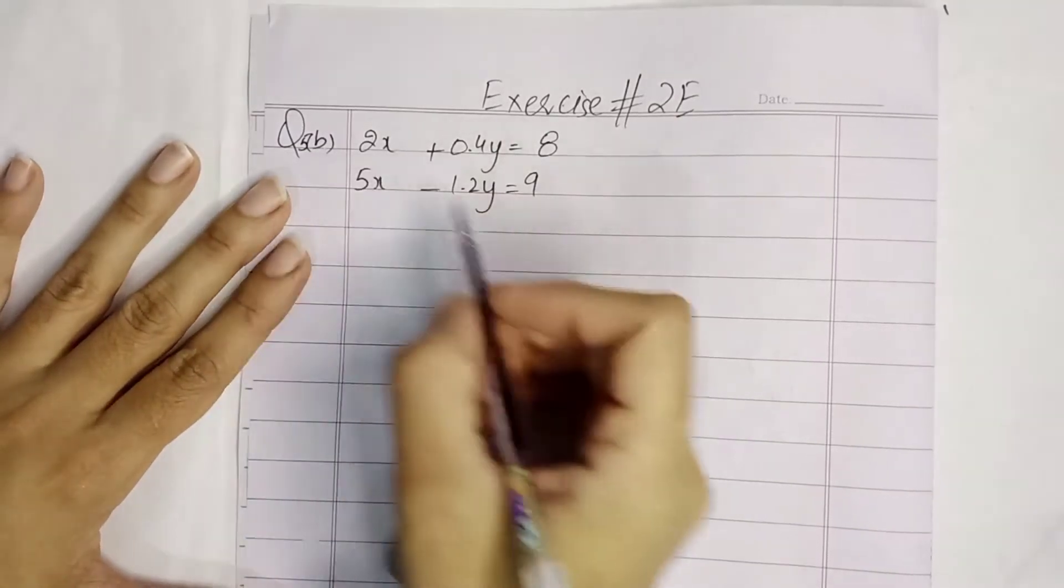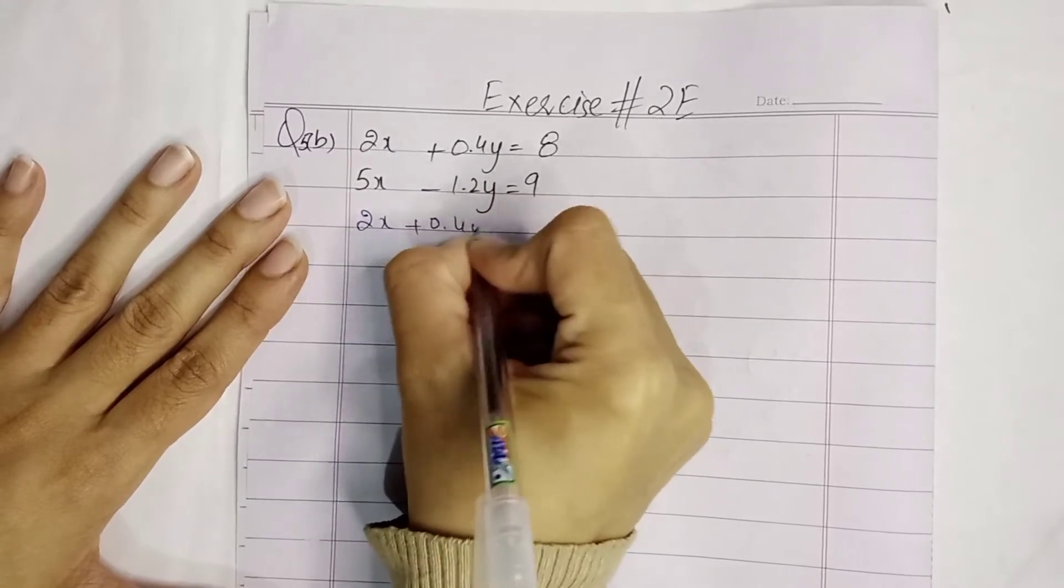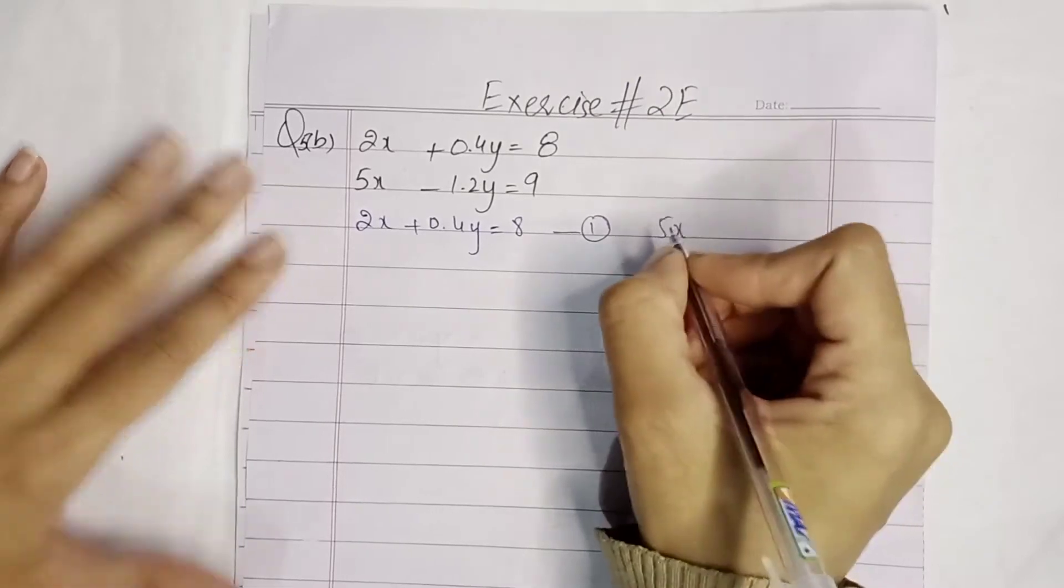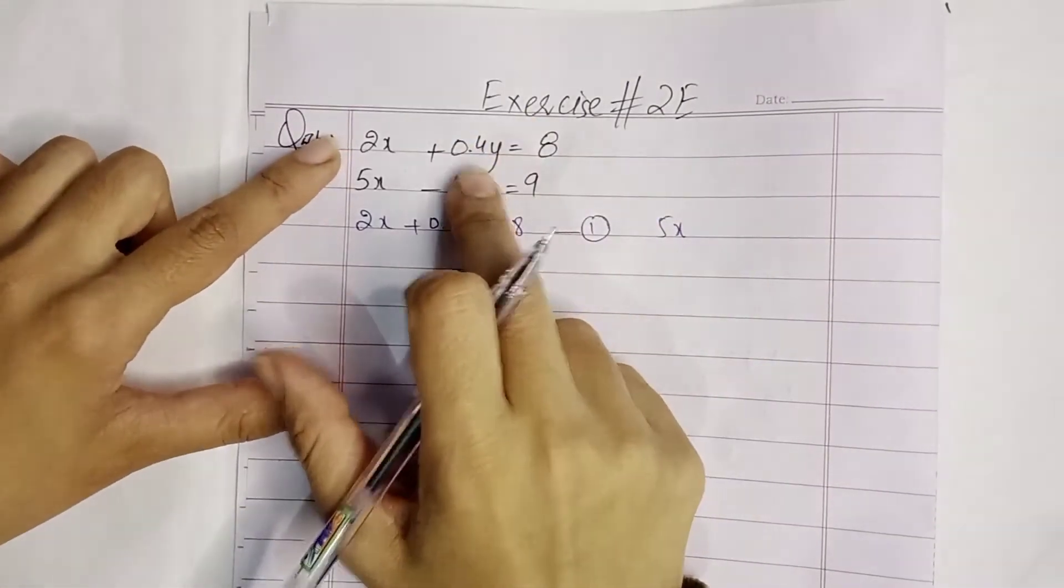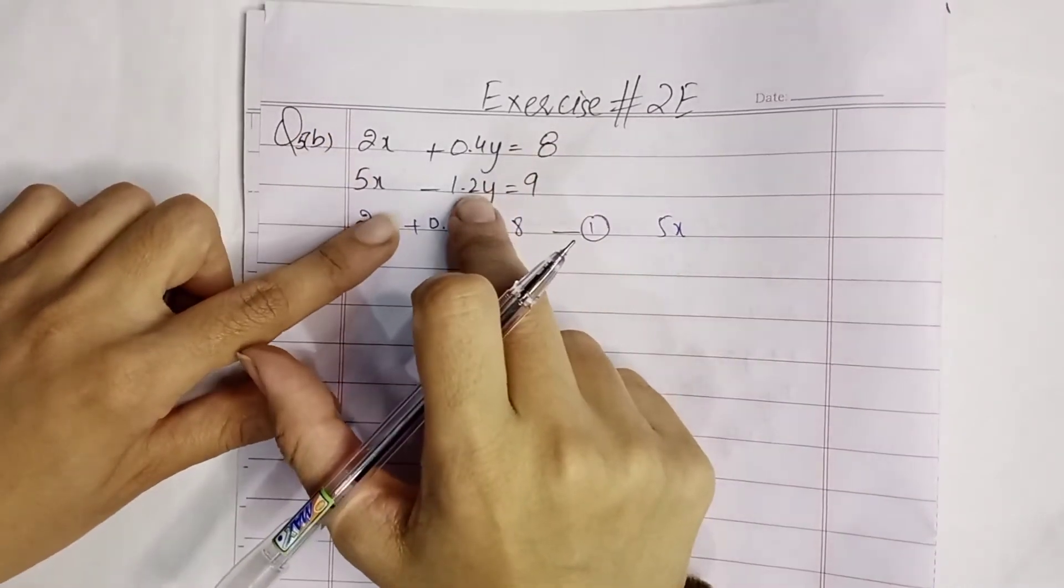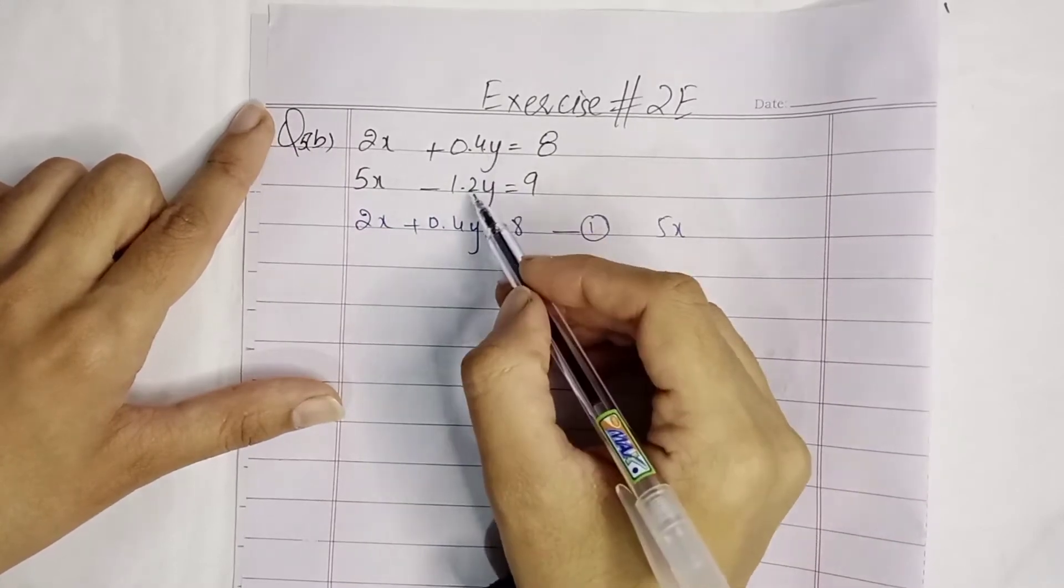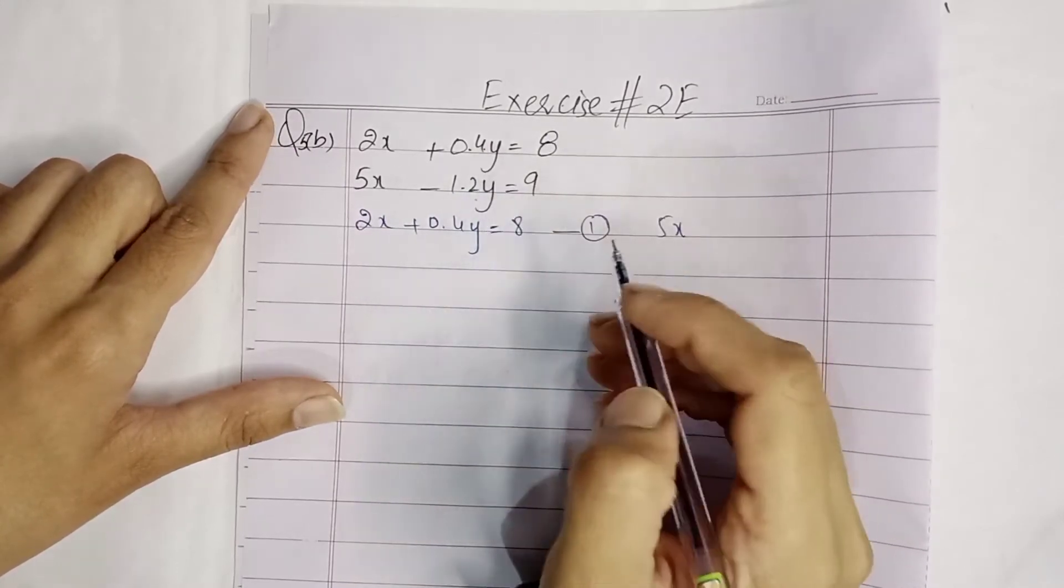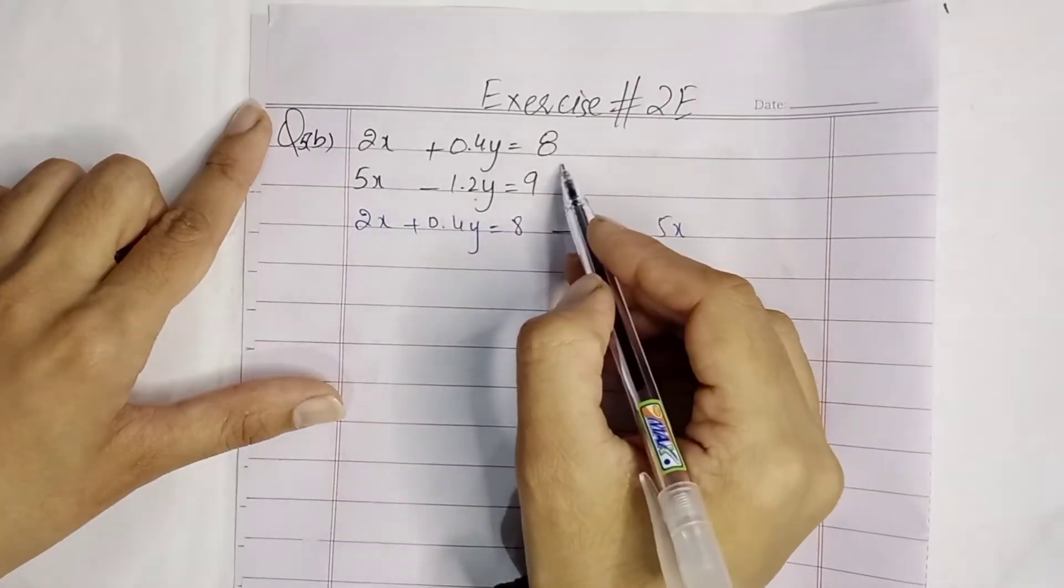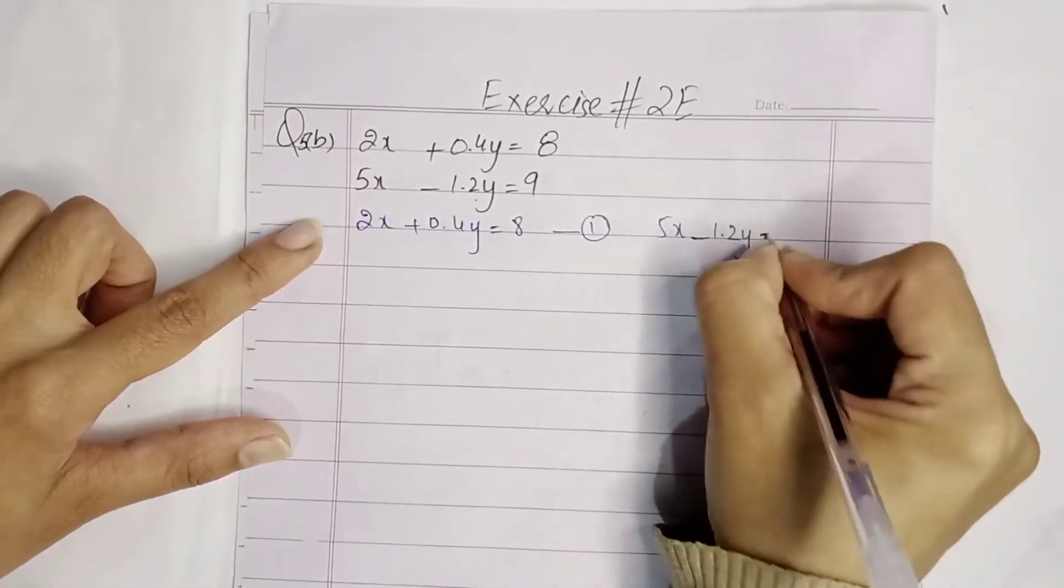Now student, part number B. First of all, we will see that here the coefficients are not equal. If we multiply one equation, we can make them equal. Look, there are four and twelve. This means we will multiply this equation by 3, then the coefficients will be equal.